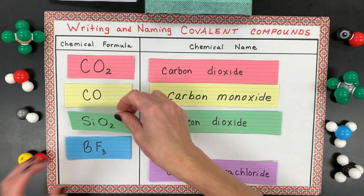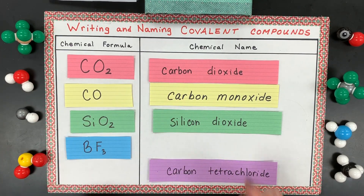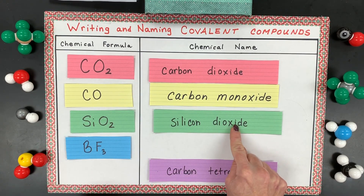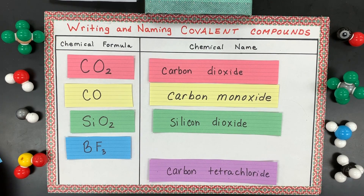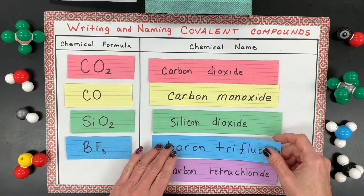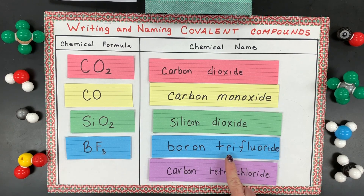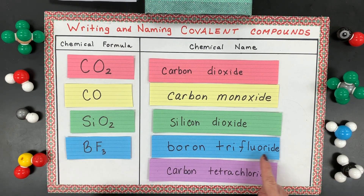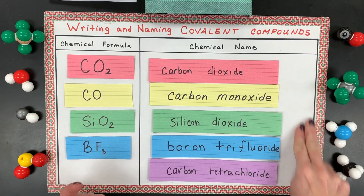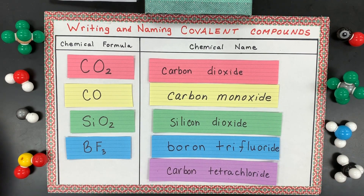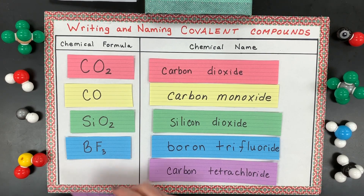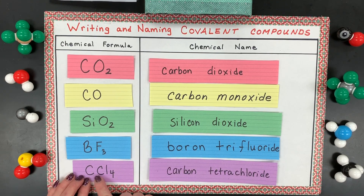Silicon dioxide is SiO2 — two oxygens and one silicon. BF3 is called boron trifluoride: 'tri' means three, so three fluorines called fluoride — again, not ionic. Then one boron. Last, carbon tetrachloride: 'tetra' means four, so CCl4. That's the first set — we're going to do two more sets.